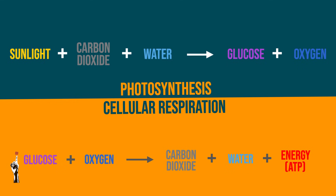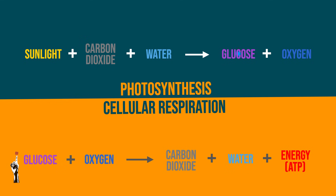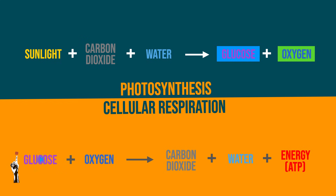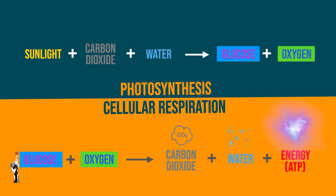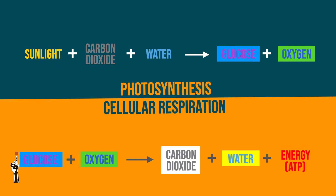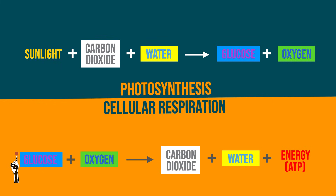So if photosynthesis takes place and glucose and oxygen are produced, the glucose and oxygen can be used during cellular respiration to produce ATP and the by-products water and carbon dioxide. The water and carbon dioxide can again be used during the reaction of photosynthesis.